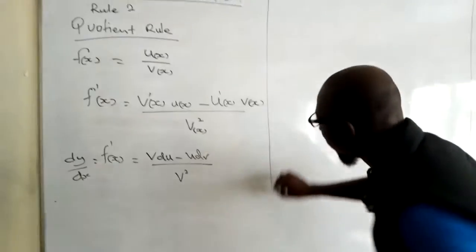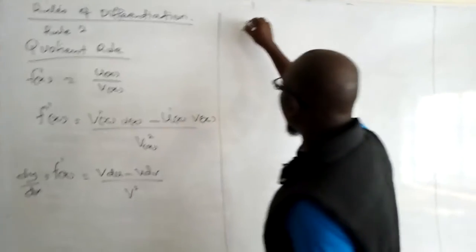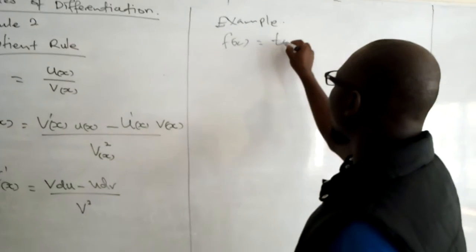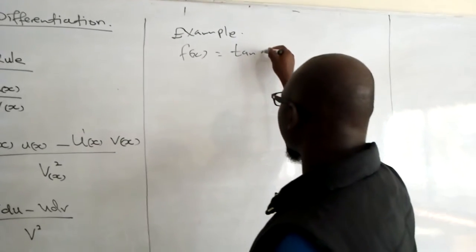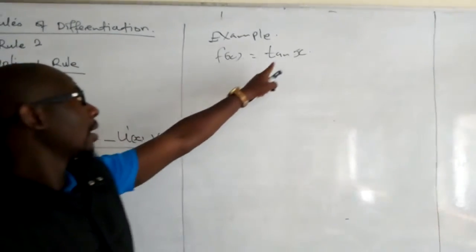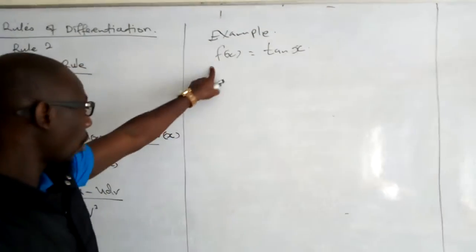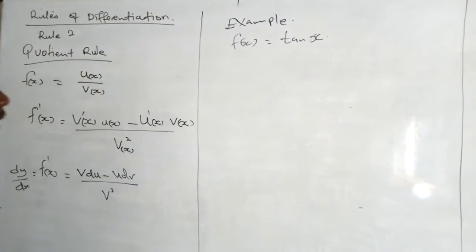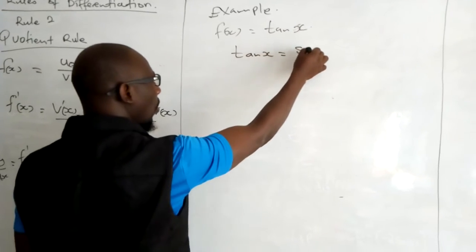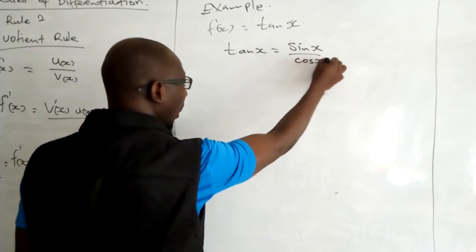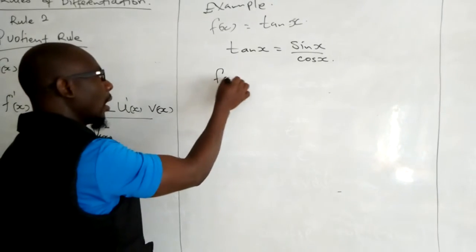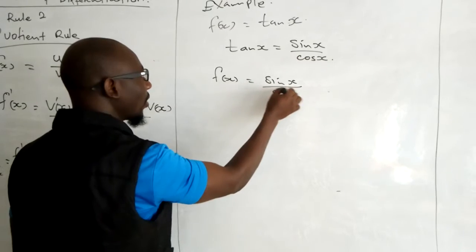So let's have an example. Example one: f of x is equal to tan of x. Now, tan of x can be written as sin of x over cosine of x. So we know that f of x is equal to sin of x over cosine of x.